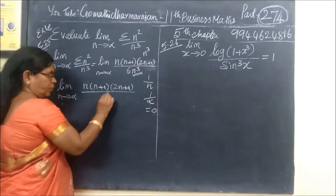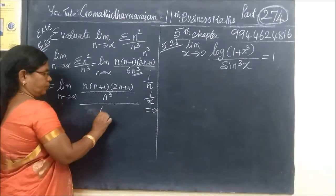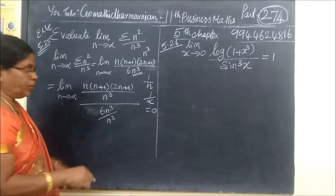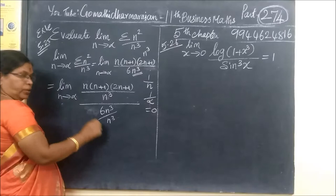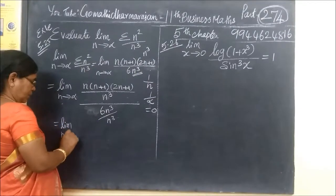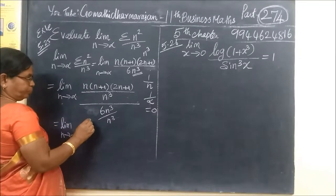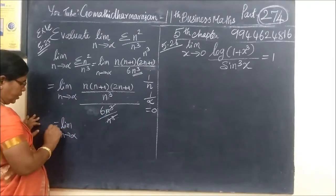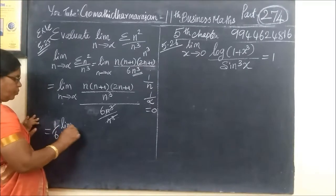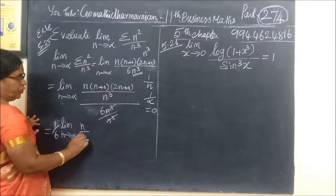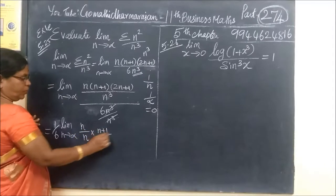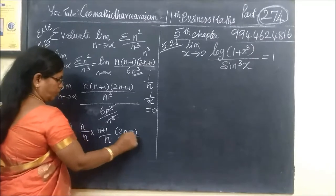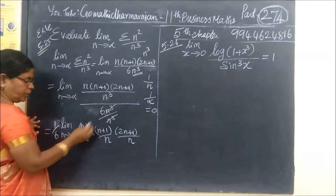We will divide it into two segments and cancel terms together. The n cubed cancels, giving 1 by 6. We can write it as 1 by 6 times n by n times 2n plus 1 by n. This n cubed is one term.